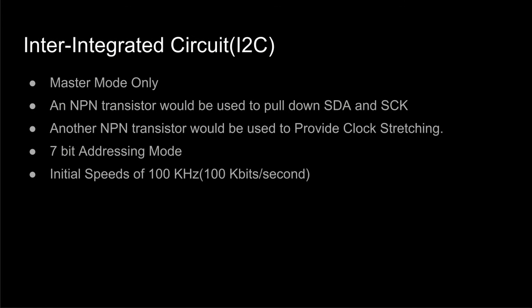For the Inter-Integrated Circuit (I2C), again I would only implement master mode. An NPN transistor would be used to pull down SDA (serial data) and SCL (serial clock). Another NPN transistor would be used to provide clock stretching — this is when a slave pulls down the clock because it cannot match the speed at which the master is transmitting. I would only implement 7-bit addressing mode, and I aim to implement initial speeds of 100 kHz, that is a transfer rate of 100 kbps.